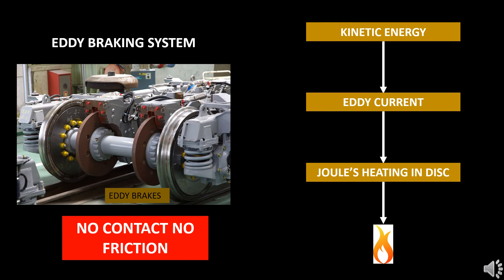In eddy braking there is no physical contact, hence no friction. Only the magnetic fields and electromagnetism are used for achieving the braking effect. Here the kinetic energy of the train is dissipated as heat by the eddy current produced in the disc through Joule's heating effect. The wear of the brake system components is very less as there is no physical contact or friction.